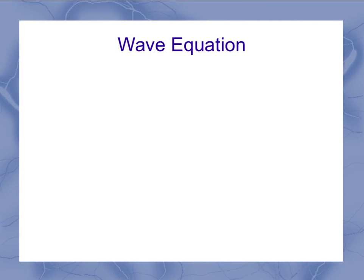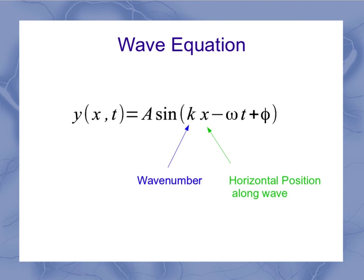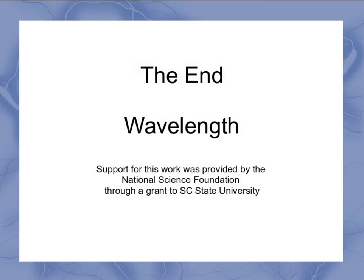So that brings us back to our standard wave equation we're using in physics. And in this case, k is my wave number, and x is my horizontal position along the wave. So that's a little bit of a more introduction to wavelength and wavenumber.